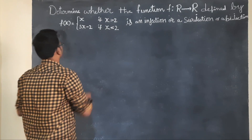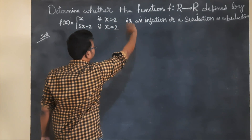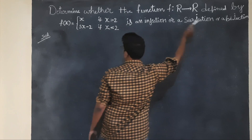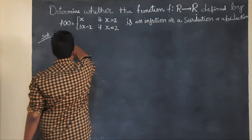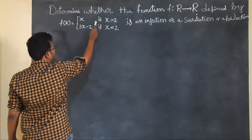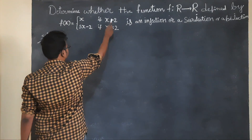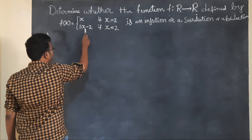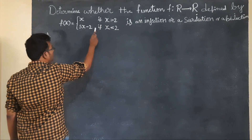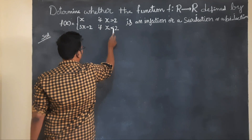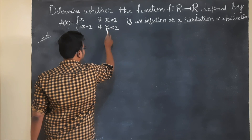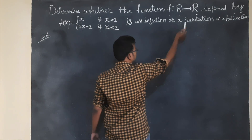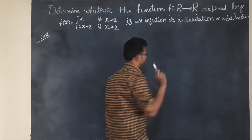Next question: determine whether the function f: ℝ → ℝ defined by f(x) = x if x > 2, and f(x) = 5x − 2 if x ≤ 2, is an injection, surjection, or bijection.